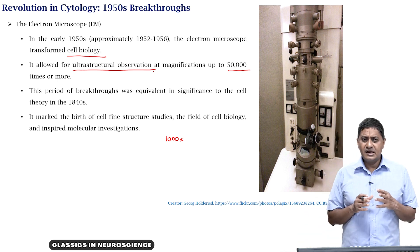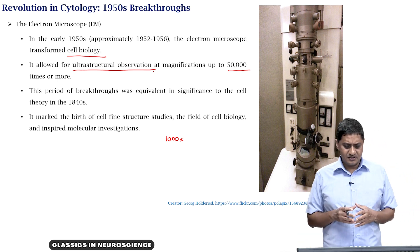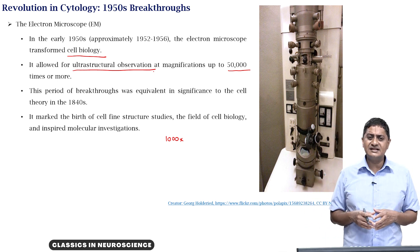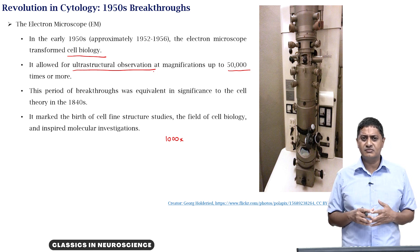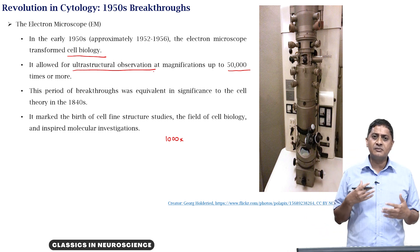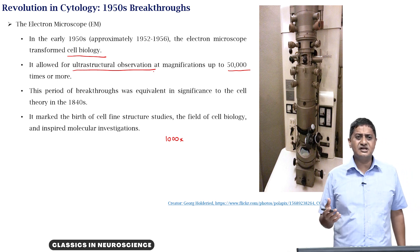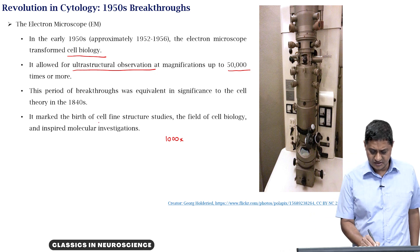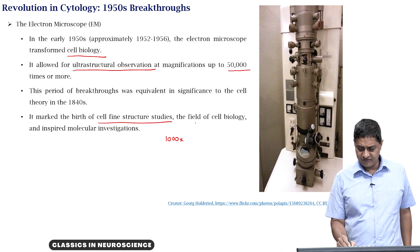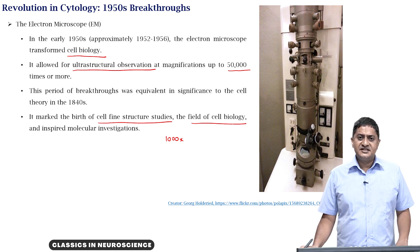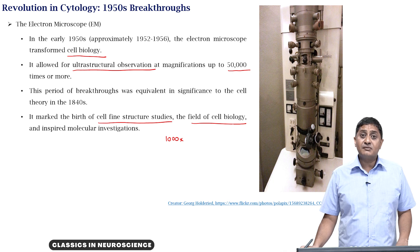The significance of this period and these breakthroughs can be compared with what happened in cell theory in the 1840s and 1850s — a period of tremendous development in the field of cell biology. This essentially marked the birth of cell fine structure and the field of cell biology, and it further inspired investigation at the molecular level.